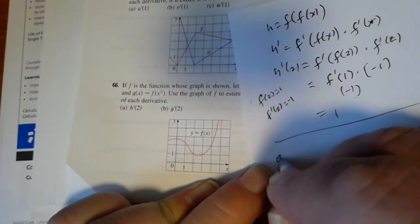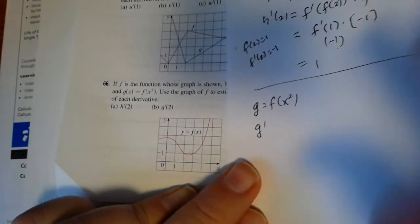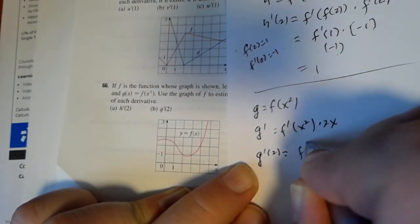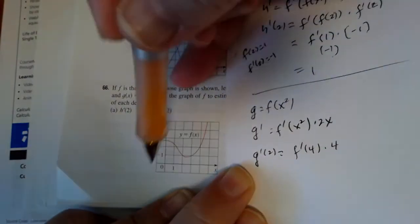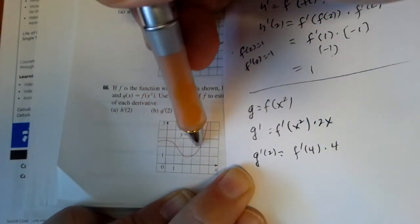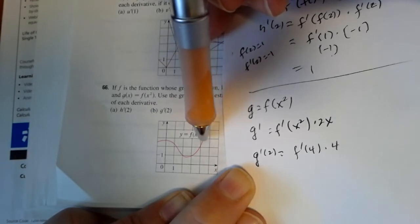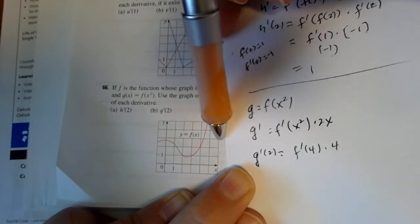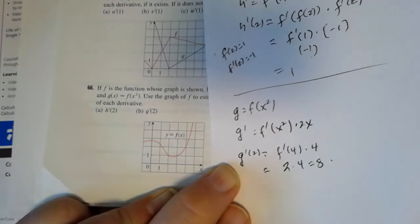For g of x equals f of x squared, g prime would be f prime of x squared times 2x. So g prime of 2 would be f prime at 4 times 4. Looking at the graph at x equals 4, the slope is steeper than 1 and positive — maybe about 2 — so that's 2 times 4, giving us 8.